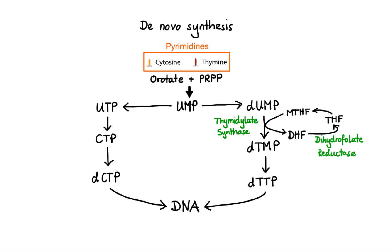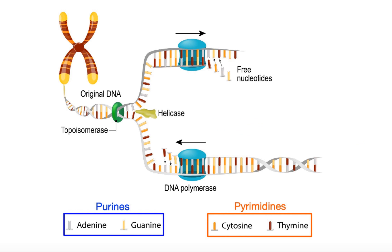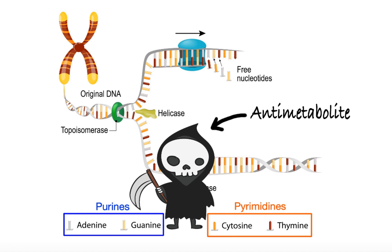Now that we've covered a basic overview of purine and pyrimidine biosynthesis, let's move on to discussing the mechanism of action of anti-metabolites. Anti-metabolites tend to exert greatest cytotoxicity in the S phase of the cell cycle by interfering with the de novo synthesis of purines and pyrimidines. In order to understand how these drugs work, let's go back to our overview of the de novo purine synthesis.